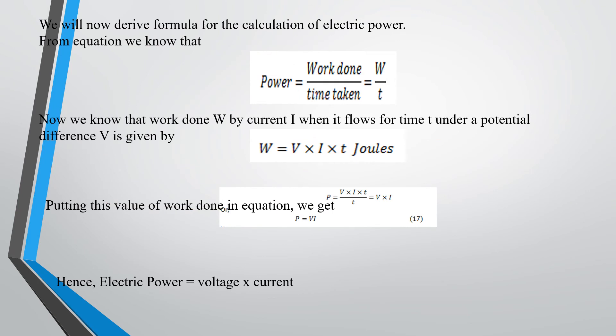We will now derive the formula for calculation of electric power from equation P equals W by T, where W equals VIT joules. Putting this value in the work done equation, you will get P equals VI, that is the relation. Hence, electric power equals voltage times current.